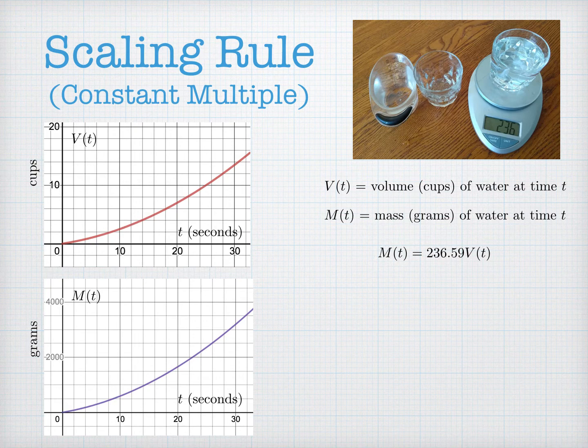Our second rule is the scaling rule, or the constant multiple rule. So imagine that I wanted to look at how much water in two different ways. One might be measuring how much water is in the bowl in cups. Or I might also be interested in how much water is in the bowl based on how much mass of water there is.